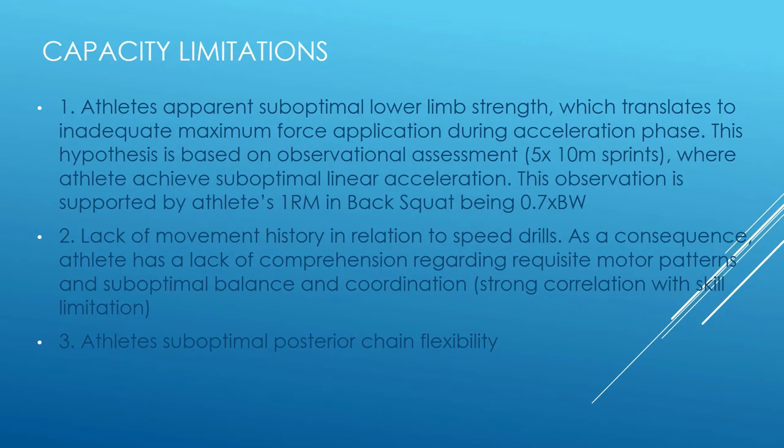A training intervention program will be implemented based on the athlete's three key capacity limitations. The first limitation is the athlete's apparent suboptimal lower limb strength, which translates to inadequate maximum force application during the acceleration phase. This hypothesis is based on observational assessment where the athlete completes five sets of 10m sprints, achieving suboptimal linear acceleration.